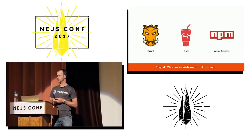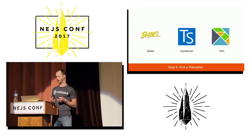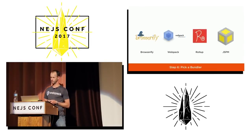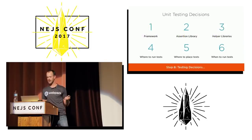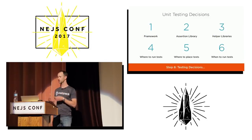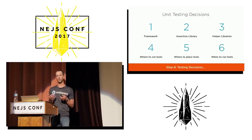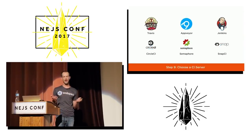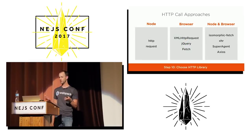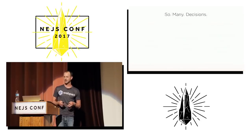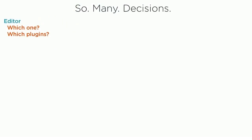What automation approach? What transpiler? What bundler? What linter? How about automated testing — we need to choose a framework, an assertion library, helper libraries, where to run our tests, when to run them, and where to place these files. We need to choose a CI server. If we're making HTTP calls or Ajax requests, we need to choose an HTTP approach.